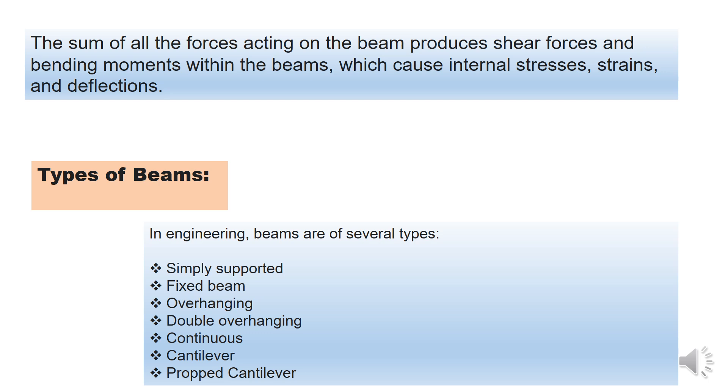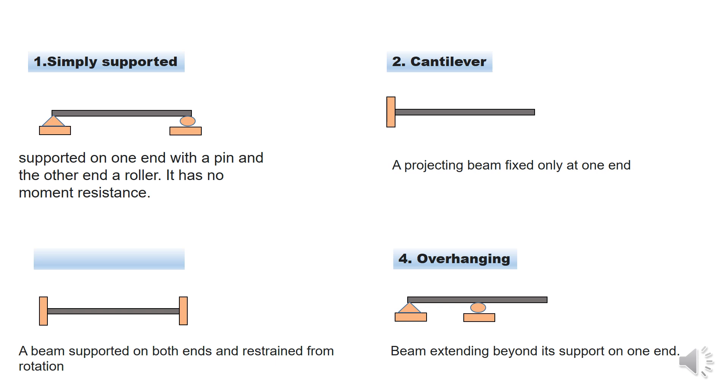So we are looking at these beams, their diagrams, how you sketch them, and their free body diagram. The first one is simply supported beam. It's a beam that has pin support at one end and roller support at the other end.